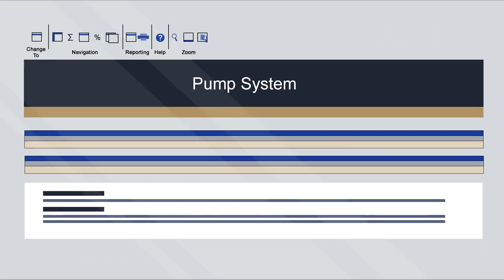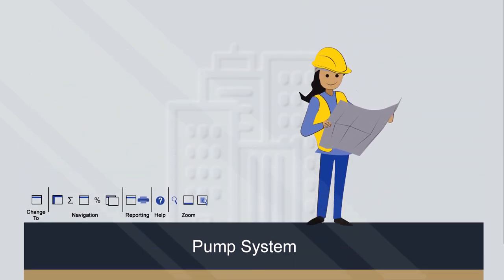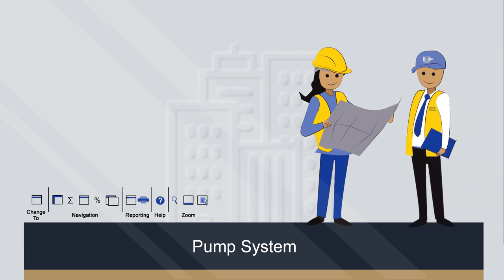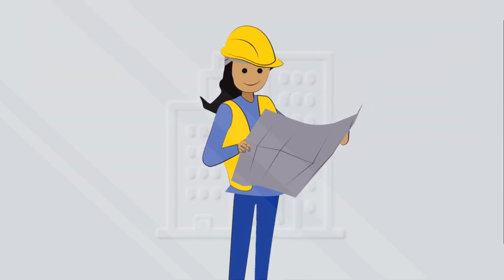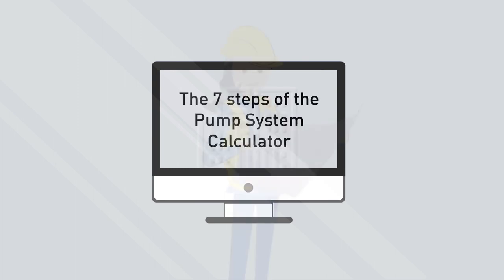When you first open the calculator, you'll notice there's a customised ribbon. The buttons within the ribbon link to each of the sheets within the calculator, and the help guide is also available from here. In order to achieve effective results, the calculator relies on entering accurate information. Some information will be known by the project engineer, while some will need to be sourced from the pump supplier. This information needs to be checked and verified against the design documentation for compliance assessment. Let's step through the seven steps of using the calculator.